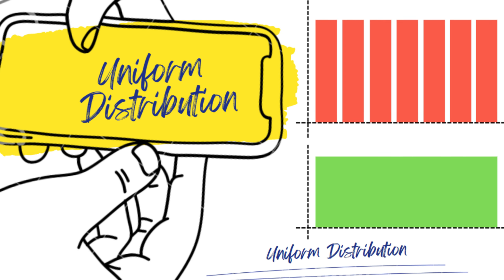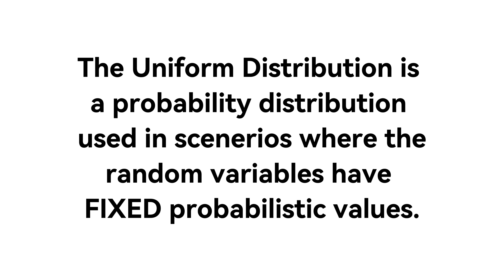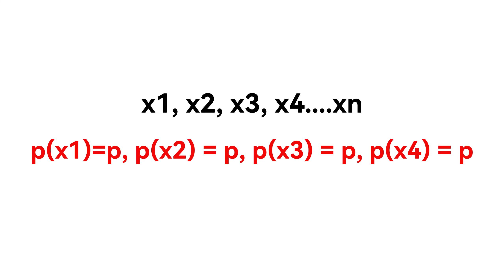Let us start with the concept of the uniform probability distribution. A uniform probability distribution, also known as the rectangular probability distribution because of its rectangular shape, is a distribution we use whenever we have a random variable where the probabilistic value attached to each of these random variables is constant — they all have the same value. So for a uniform distribution, we have several values of random variable x each with the same fixed probabilistic value p.